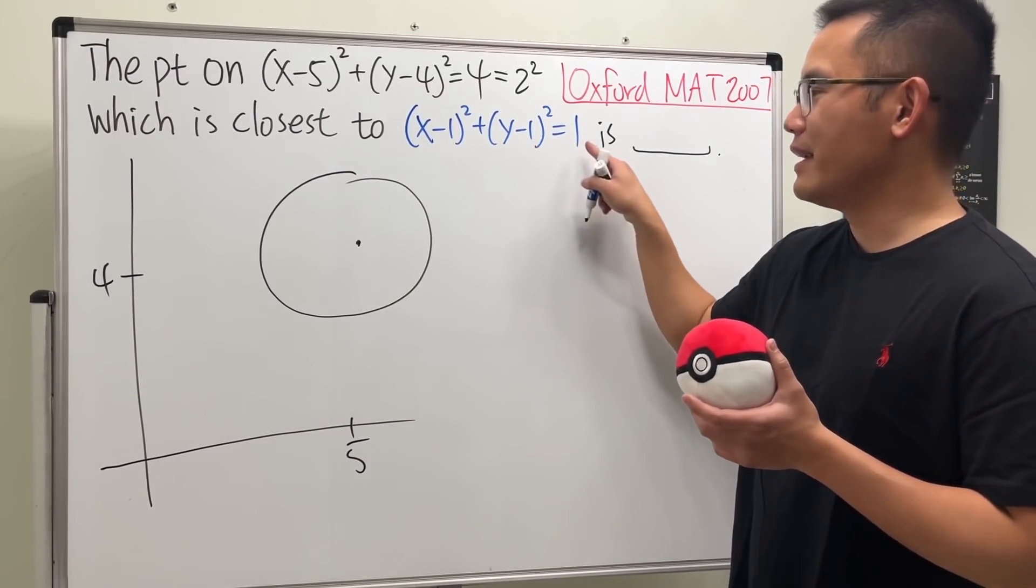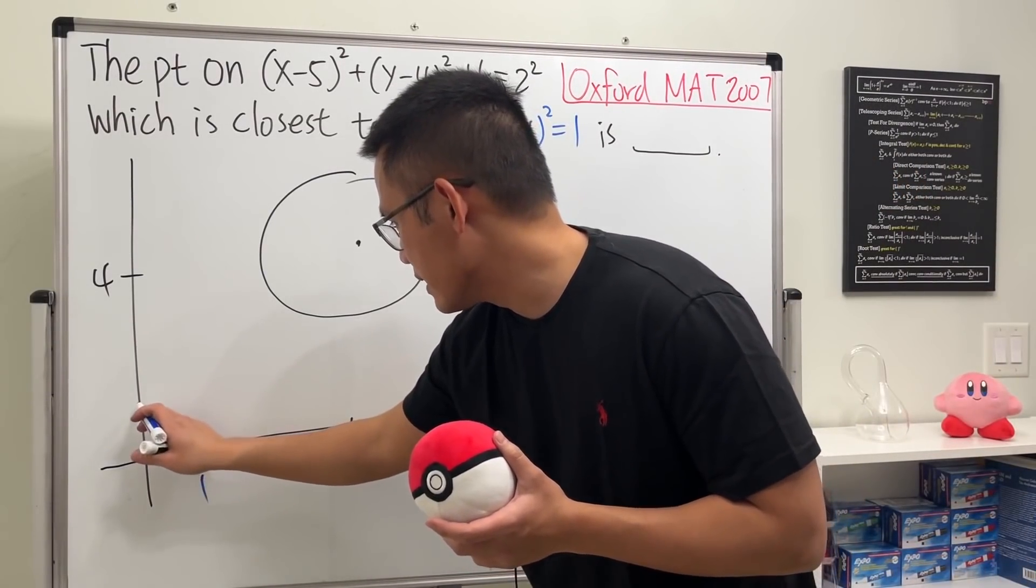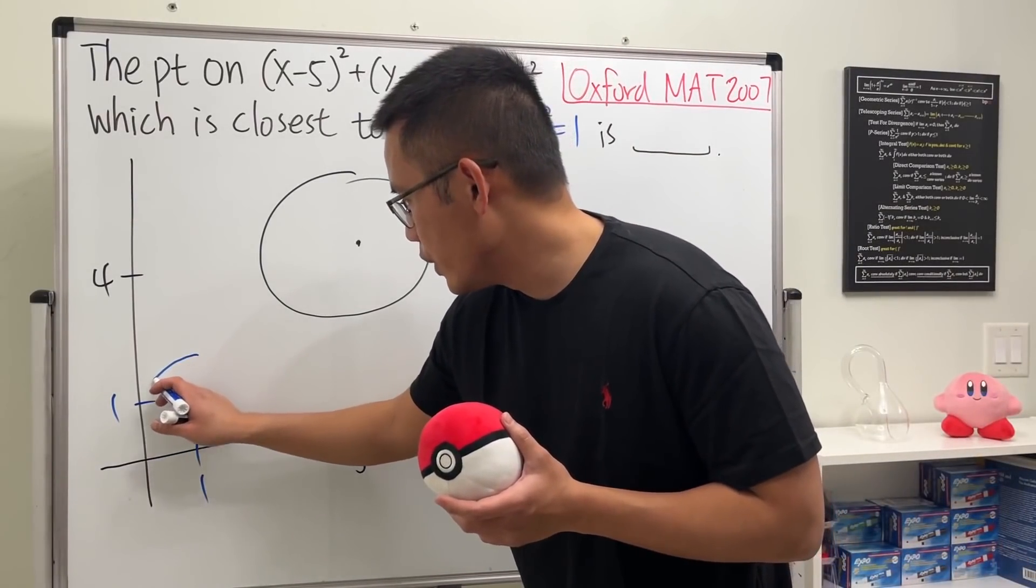This center is (1,1) and that radius is also 1. So let's say here is 1 and let's say here is 1, and this is the center. Of course the radius is also 1, so we will have a picture that looks like this.